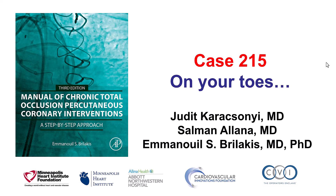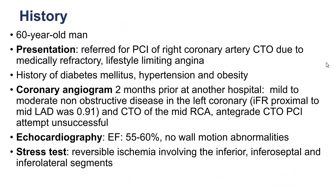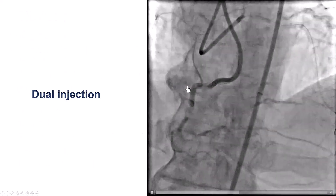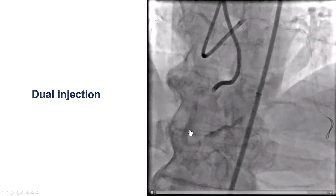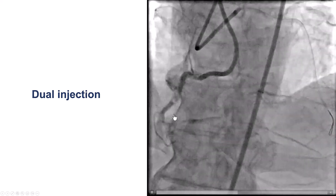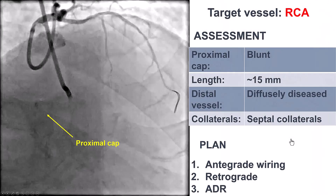This is a case in which we had to be on high alert throughout the procedure, as the patient had intermittent chest discomfort as well as ST segment depressions. The patient was a 60-year-old gentleman referred for PCI of a right coronary artery CTO because of medically refractory angina. He had a previous unsuccessful attempt, moderate disease in the LAD with an IFR of 0.91, and normal ejection fraction with inferior ischemia on stress testing. His coronary angiogram shows a right coronary artery CTO with some bridging collaterals, severe calcification throughout the vessel, a length of about 10-20 mm, and good caliber distal vessel with septal collaterals supplying the distal vessel.